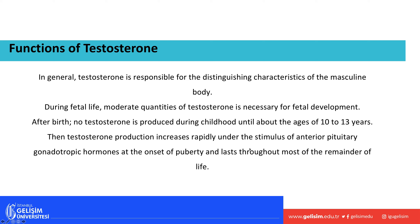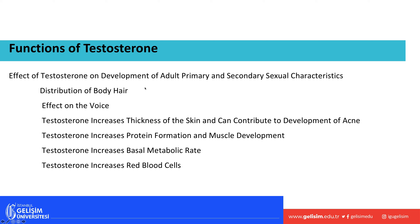Testosterone production increases under stimulus of anterior pituitary gonadotropic hormones. Secondary sexual characteristics include body hair, pubic hair, and voice deepening. Testosterone also thickens the skin and can promote acne formation. It increases protein formation and muscle development, raises basal metabolic rate, and increases red blood cell production.